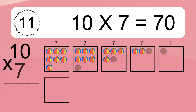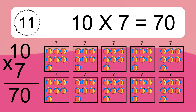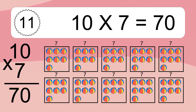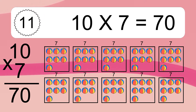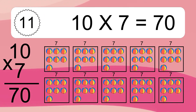Ten times seven equals what? Ten times seven equals seventy. We have ten boxes and each box has seven colorful balls inside. If you count all the balls in all the boxes together, you will have ten times seven balls. This equals seventy balls.